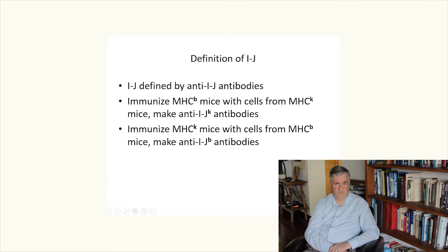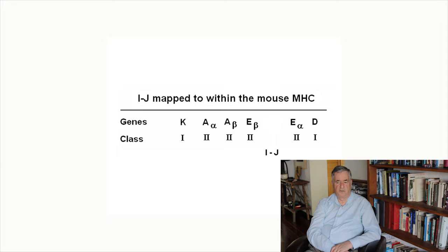We produce antibodies with the IJB serological phenotype by immunizing MHC mice, for example, with cells from MHC allele B mice. In those two papers published in the Journal of Experimental Medicine, which included a large number of different mice from different genetic backgrounds, the investigators in both groups found that the apparent location of IJ within the MHC was between E-beta and E-alpha.